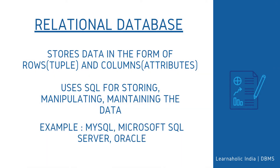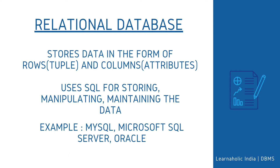The next type is relational database. This database is based on the relational data model, which stores data in the form of rows (tuples) and columns (attributes), and together they form a table (relation). A relational database uses SQL for storing, manipulating, as well as maintaining the data. E.F. Codd invented the relational database in 1970. Each table in the database carries a key that makes the data unique from others. Examples of relational databases are MySQL, Microsoft SQL Server, Oracle, etc.